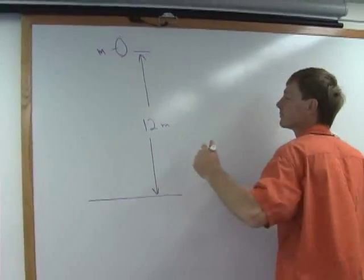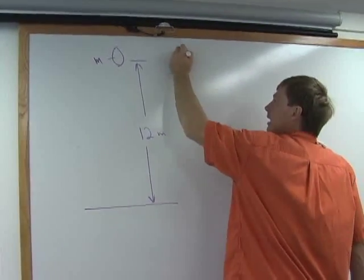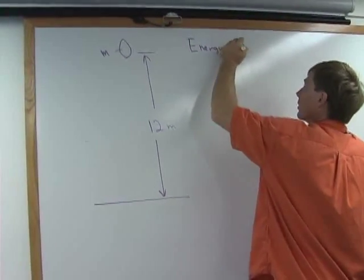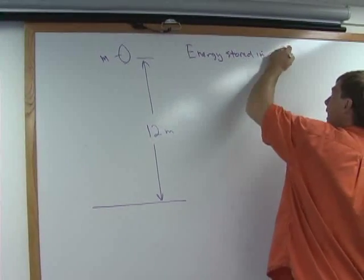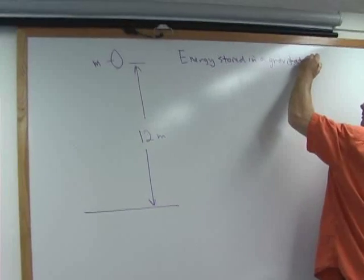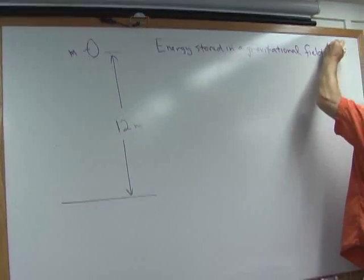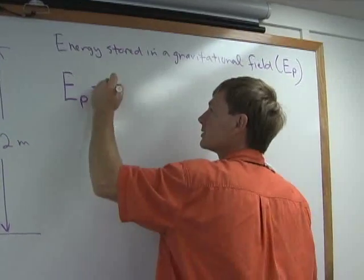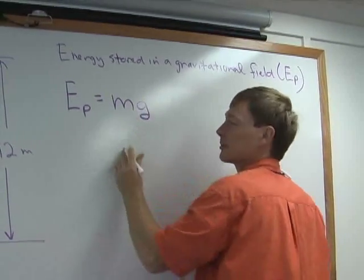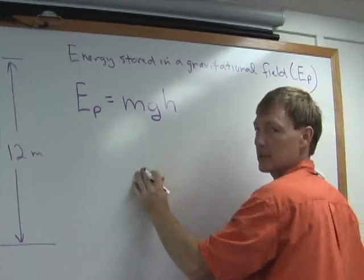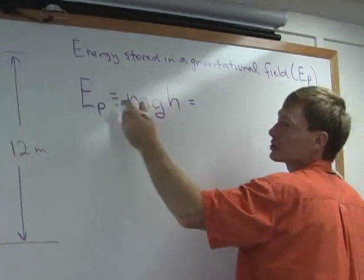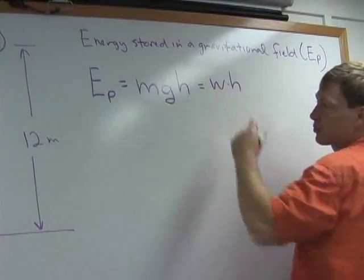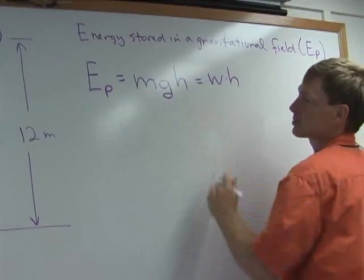This has got a certain mass. The energy stored in a gravitational field is given by EP — potential energy, because you can use it. The potential energy is due to the mass times gravity times the height. In English units, it's just the weight of the object — the force times the height.